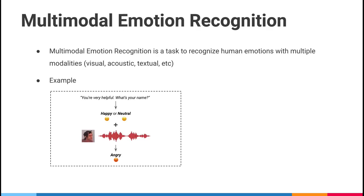So what is multimodal emotion recognition? It is a task to recognize human emotions with multiple modalities, for example, the visual, acoustic, and the textual. Here is an example. As you can see, different modalities provide supplementary information to make the classification more accurate.